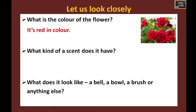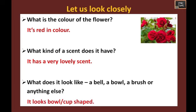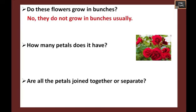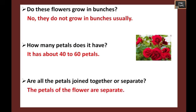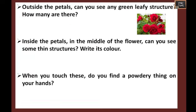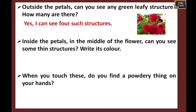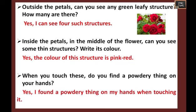I'll describe about the rose. What kind of scent does it have? It has a very lovely scent. What does it look like? It has a bell or cup shape — you can mention the shape of your flower. Does the flower grow in bunches? Sometimes it does and sometimes it does not. How many petals does it have? Around 40 to 60 petals. Are all the petals joined together or separate? Write 'separate' or 'joined' based on the flower you have. Outside the petals, can you see any green leafy structure? Yes, there are about four such structures. Inside the petals, in the middle of the flower, you can see some thin structures — they are pink or red in color. When you touch them, you can feel a powdery thing.